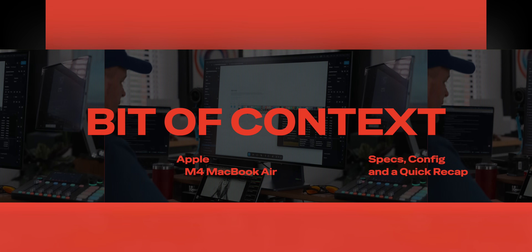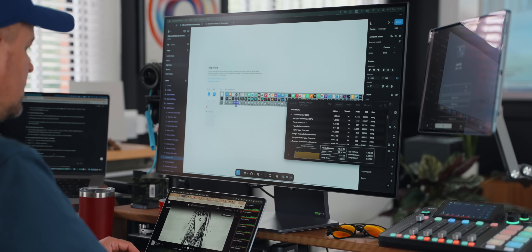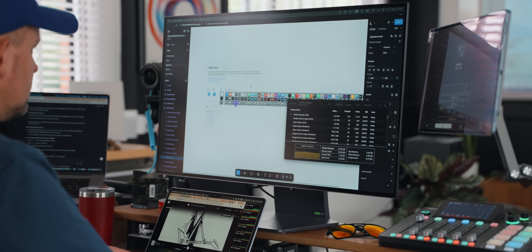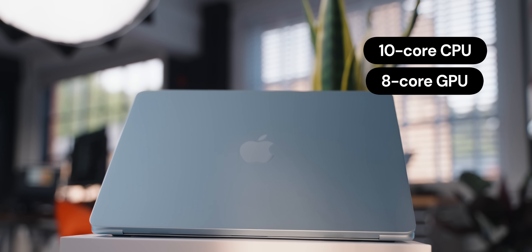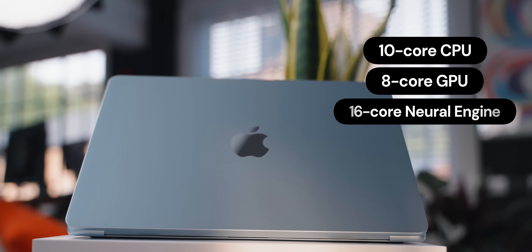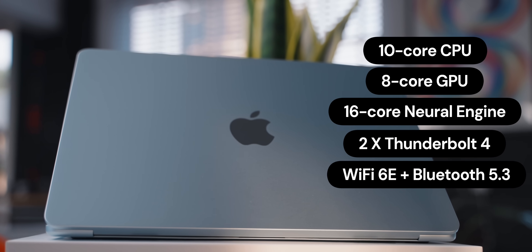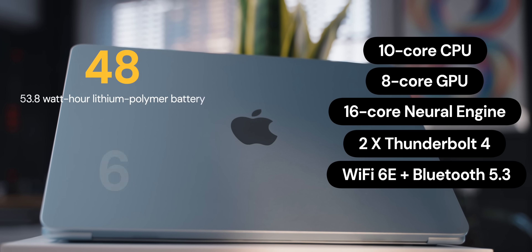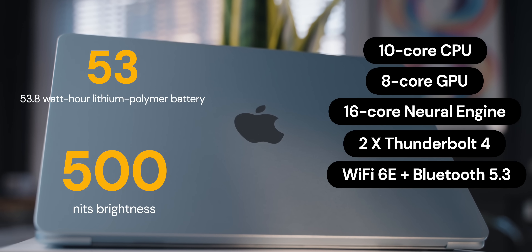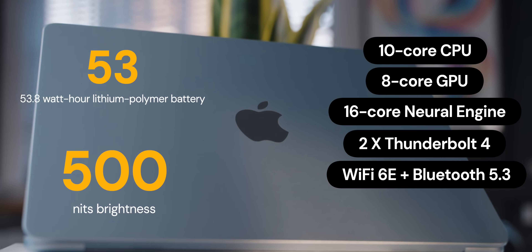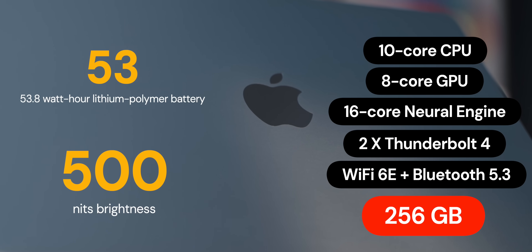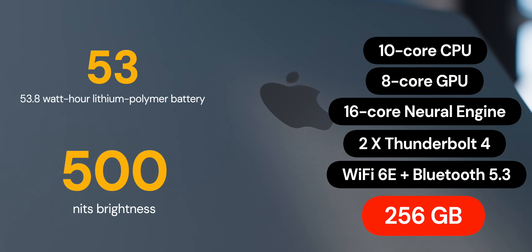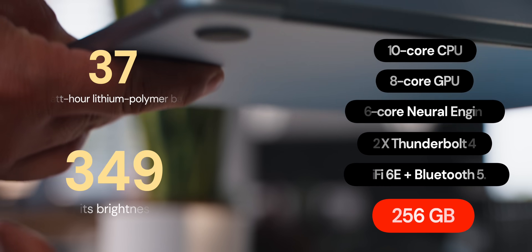So today we're going to be doing a full day of design work using this base model, with all the apps that I've used myself. Quick recap on the specs: we've got the cheapest model here, the M4 chipset with 10-core GPU, 16GB of unified memory, and only 256GB storage. No active cooling — and yet, this thing has been incredible.